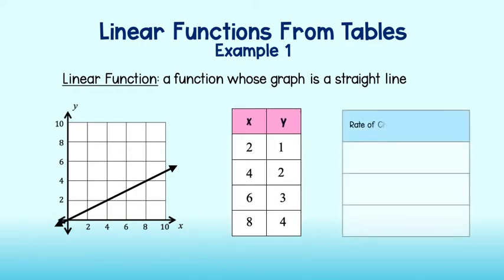We look at the rate of change, or the change in y over the change in x. Let's check it out. To get from 1 to 2, I add 1. And to get from 2 to 4 on the other side, I add 2. The rate of change between these two points on the graph is 1 over 2, or 1 half.